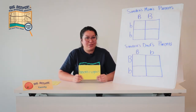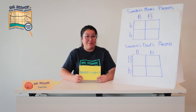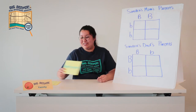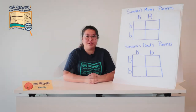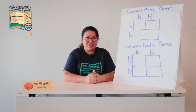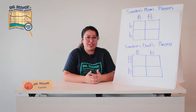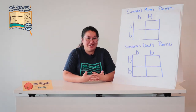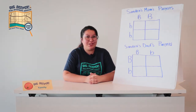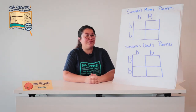Now, those were a lot of big words. Let's put that into practice to see how much you've learned. Let's use my friend Sandra as an example. She has green eyes even though both her parents have brown eyes. How did that happen? We'll figure that out with a Punnett square.